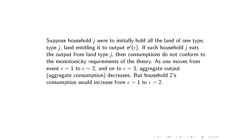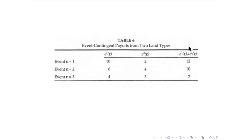Suppose we divided up the land in an extreme way — household one gets all of type-one land and household two gets all of type-two land. Is that an optimal allocation? If they were forced to eat the grain off their own strips, would consumption correspond to the model? The answer is no, because aggregate endowment goes down as epsilon increases, and that's true of household one's consumption but not household two's. This proposal fails the monotonicity requirement that as aggregate consumption goes down, everybody's consumption ought to go down.